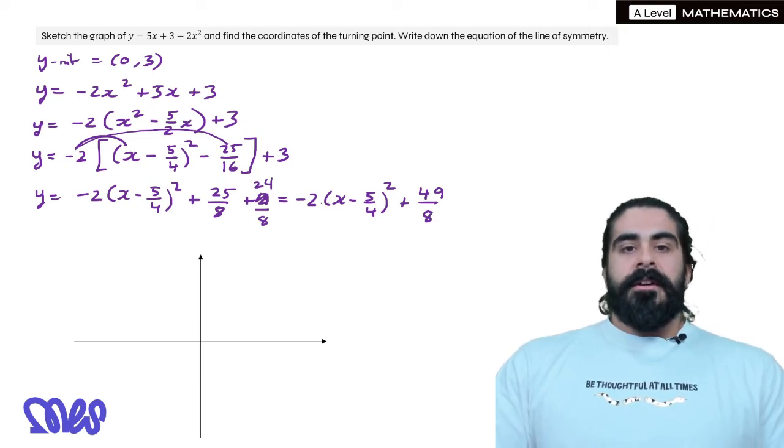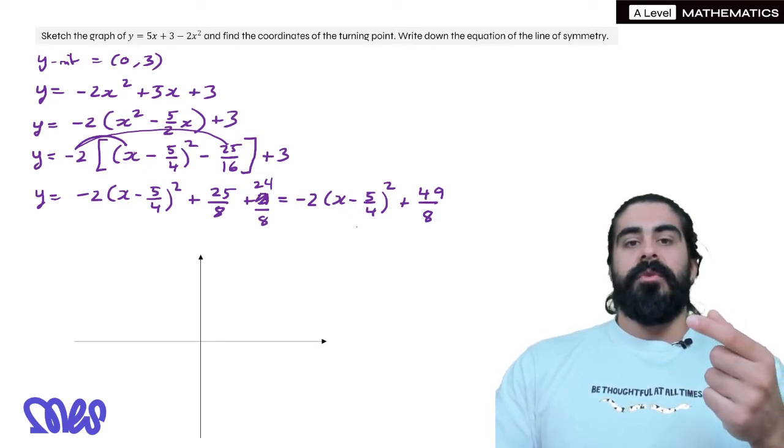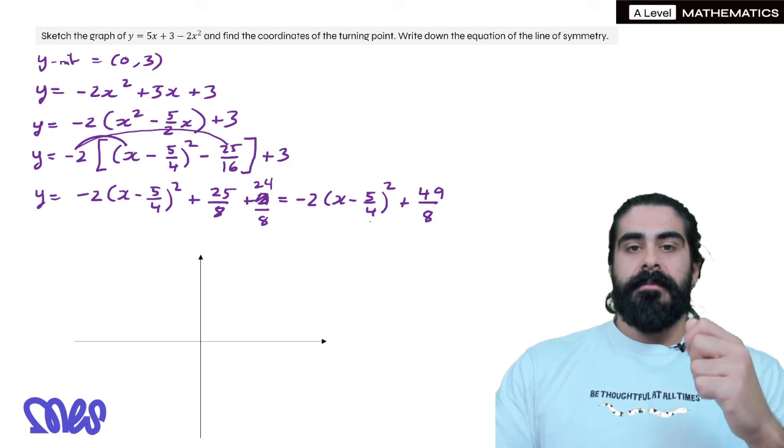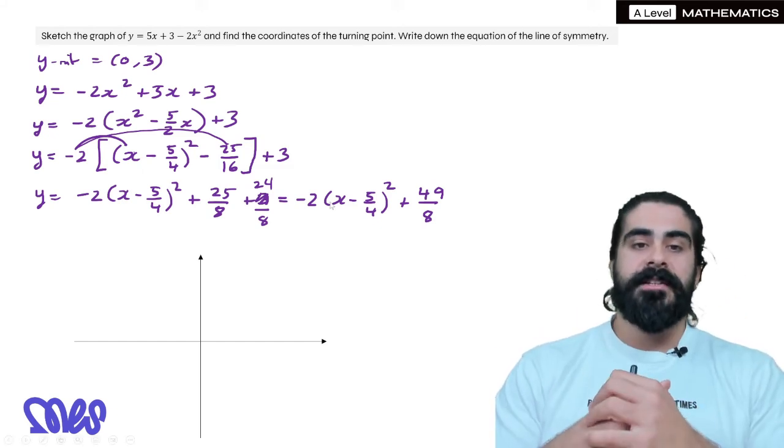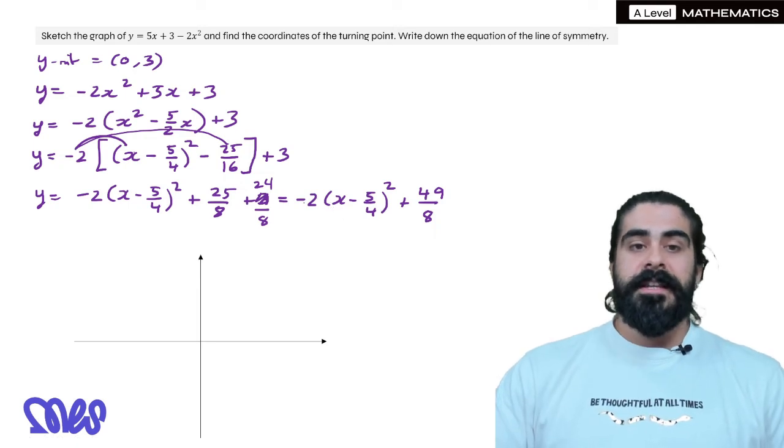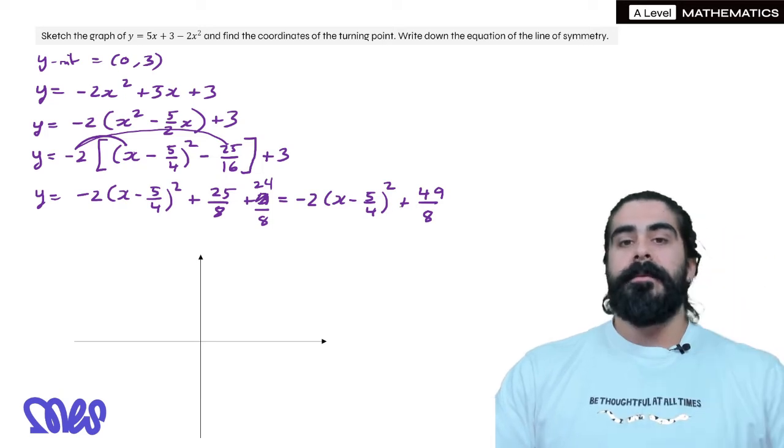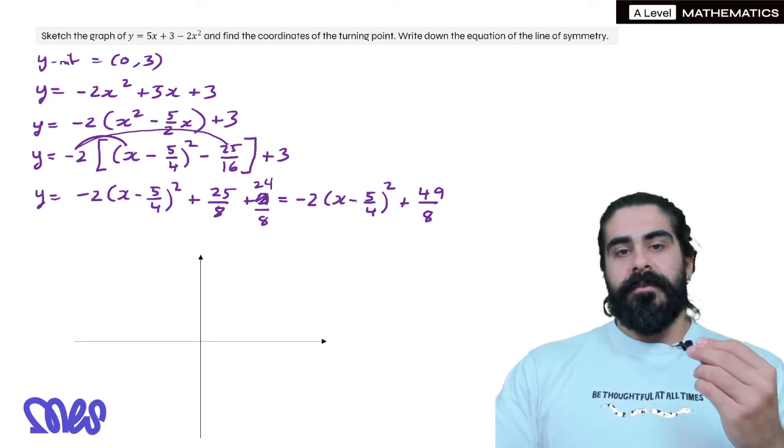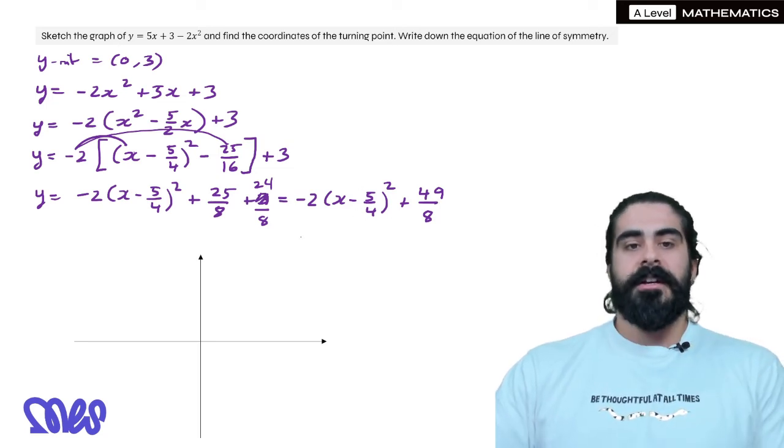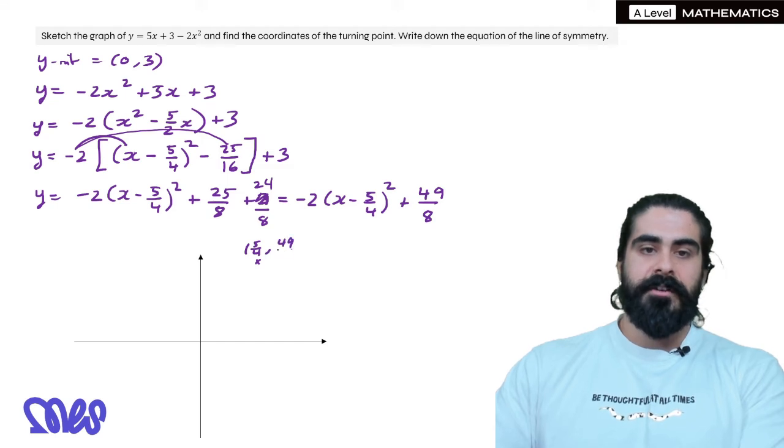So its turning point is at 5 over 4. Okay, so what transformations of the x squared graph is this? Well, x minus 5 over 4 will shift the x squared graph to the right by 5 over 4. The 2 stretches it in the y-axis by a scale factor of 2. The negative makes it upside down. And then the 49 over 8 is going to move it up by 49 over 8. So its turning point is at 5 over 4 comma 49 over 8.